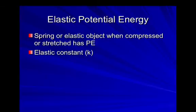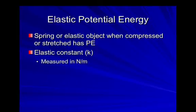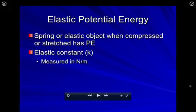One of the things that does affect how much energy you have is something called the elasticity, or the elastic constant, that a spring or object will have. We're going to use the symbol k to denote the elastic constant, and the units of the elastic constant are in newtons per meter. Here I have a spring that isn't stretched.